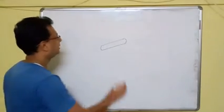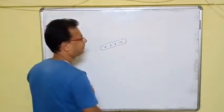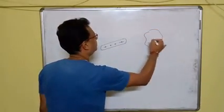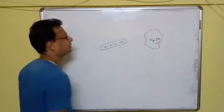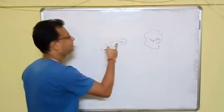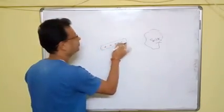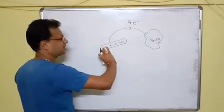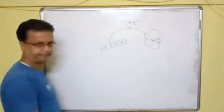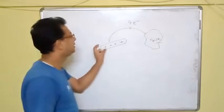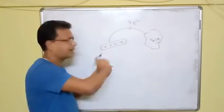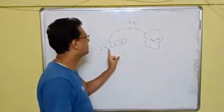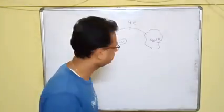When the glass rod is rubbed with silk, it acquires positive charges. This means some electrons — say four electrons — are transferred from the glass rod to the silk. The valence electrons of the glass rod are dislodged from the glass rod to the silk, and that is why the glass rod has positive charges. Now, anybody with a charge, we write it as Q = n × e, where e is the charge of the electron, equal to 1.6 × 10⁻¹⁹ coulombs. So the charge of the glass rod will be 4 × 1.6 × 10⁻¹⁹ coulombs.